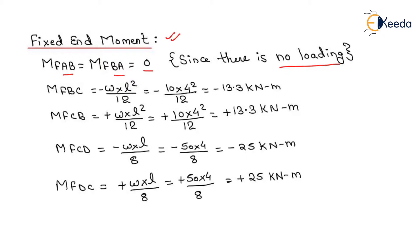For span BC, the fixed end moment is written as −WL²/12 due to the uniformly distributed load. Putting in the values: −10 × 4² / 12 gives −13.3 kN·m for MF_BC. For span CB, the magnitude is the same but the sign is opposite, giving +13.3 kN·m.